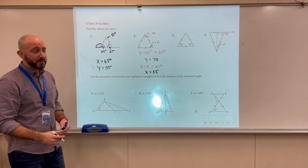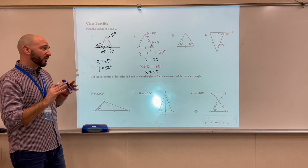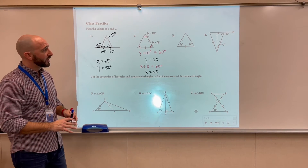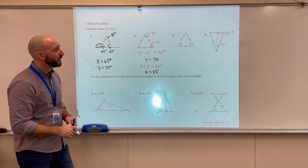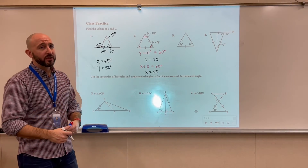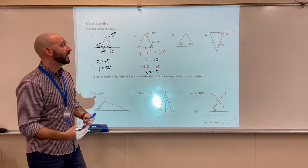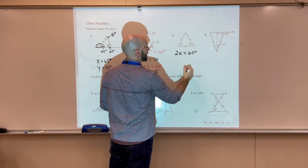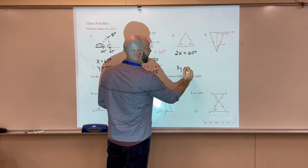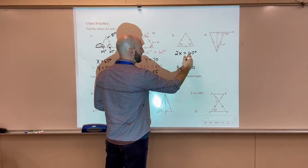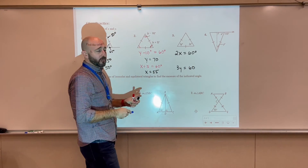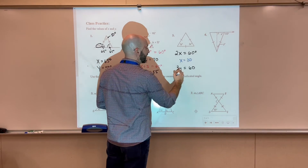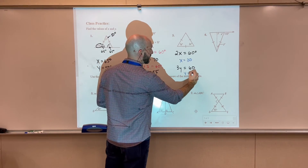Number three is solved using almost the same technique as problem two. It's also an equilateral triangle, which means all angles are 60 degrees. So we set up: 2x equals 60, and 3y equals 60. Dividing both sides by two gives x equals 30. Dividing both sides by three gives y equals 20.